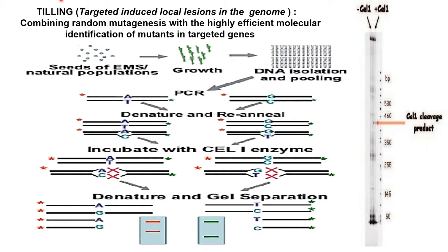In the case of TILLING, the procedure we follow is that first the seeds of interest will be selected. These seeds will then be incubated in ethyl methyl sulfonate for a particular period of time.